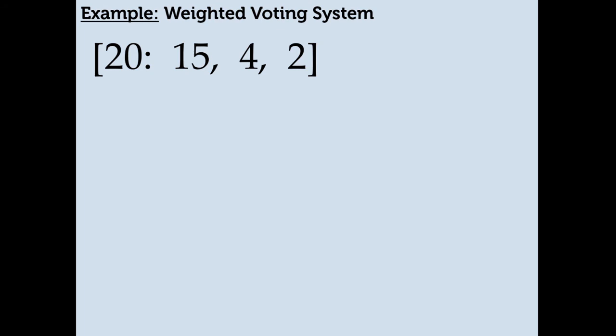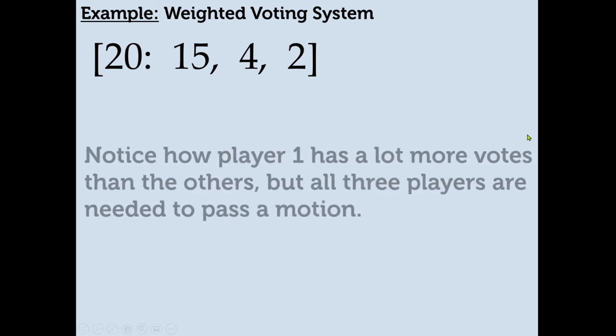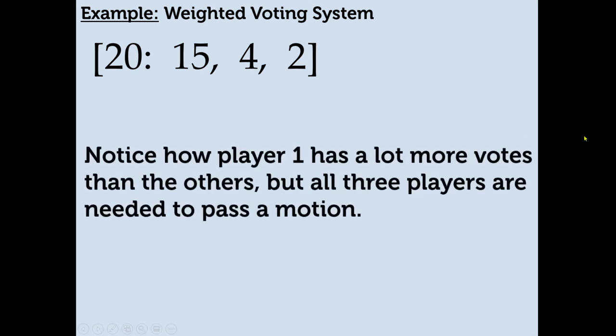In the last video, we looked at a weighted voting system. The first number is the quota, which is the minimum number of votes required to pass a motion. In this weighted voting system, we have three players: Player 1 has 15 votes, Player 2 has 4 votes, and Player 3 has 2 votes. But if you look closely, Player 1 has a lot more votes than the other players, but all three players are needed to pass a motion.